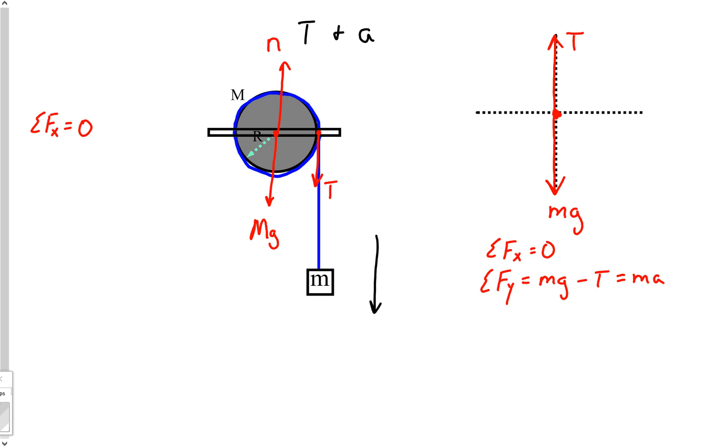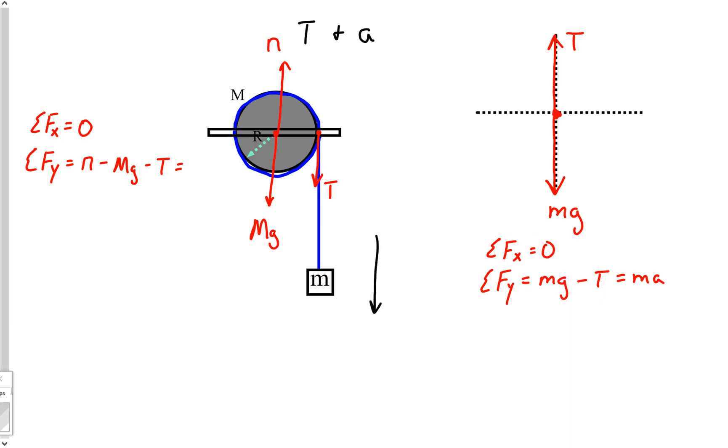Sum of the forces y, well we've got an n going up minus a capital mg down and minus a T as well. But here's the thing, what's this one equal to? What does the sum of the forces y for this equal to? Well you got to be thinking, this sum of the forces x and y is referring to the center of mass of this object.